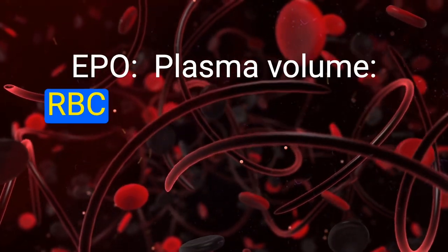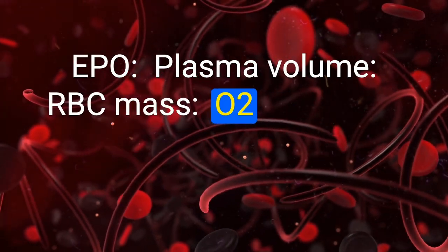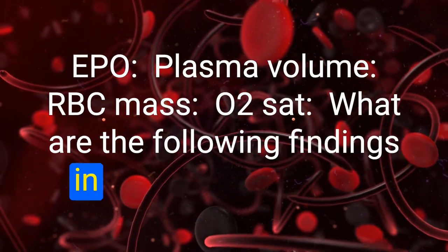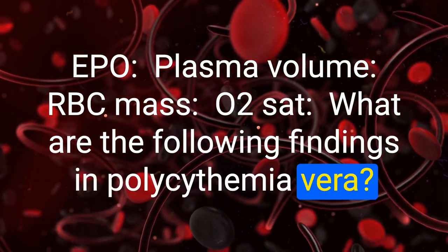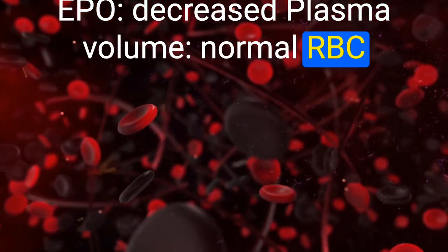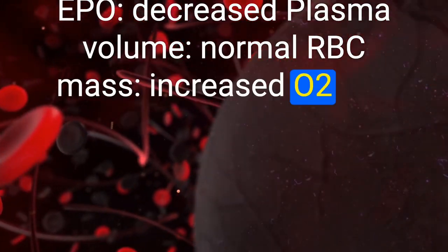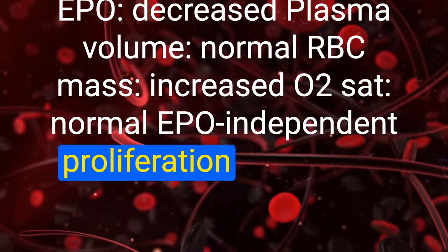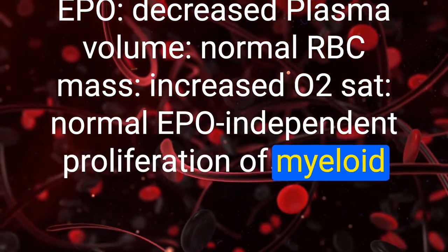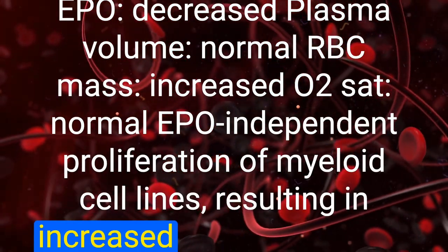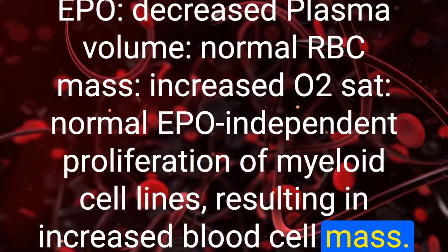What are the following findings in polycythemia vera? EPO: decreased. Plasma volume: normal. RBC mass: increased. O2 saturation: normal. EPO-independent proliferation of myeloid cell lines results in increased blood cell mass. Normal O2 saturation helps distinguish PV from secondary polycythemia caused by chronic hypoxia.